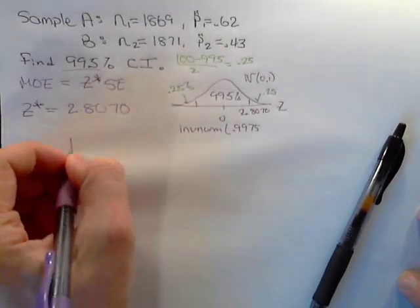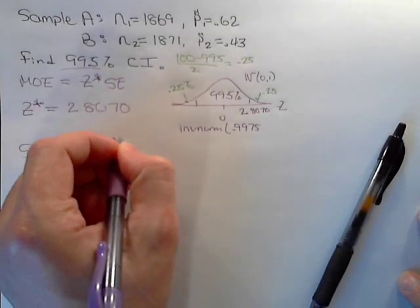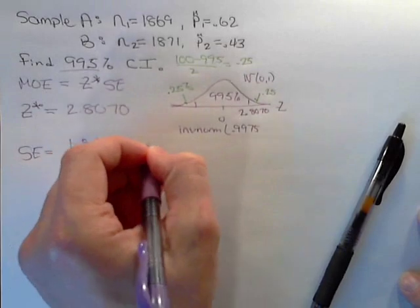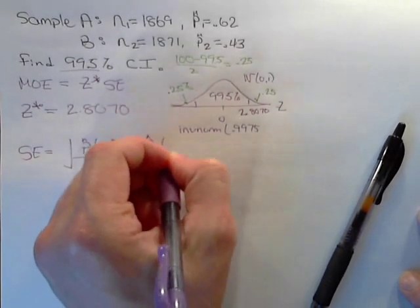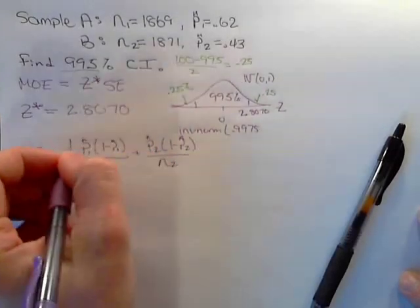The standard error equals the first sample proportion times 1 minus the first sample proportion divided by that sample size, plus the second sample proportion times 1 minus the second sample proportion divided by that sample size.